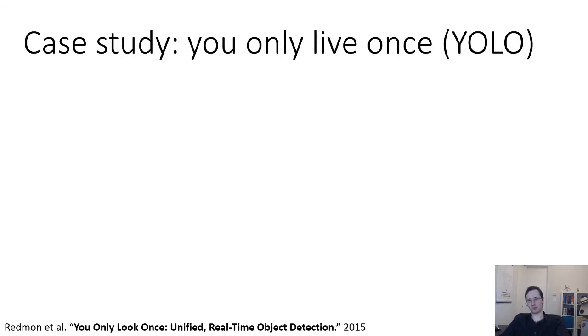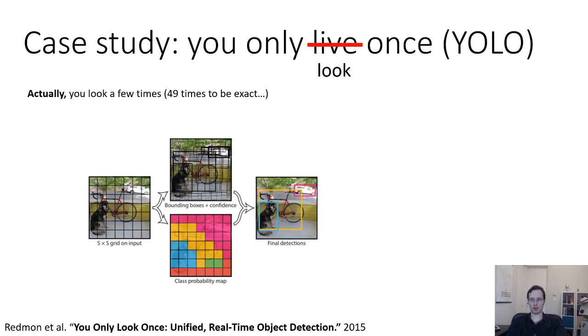So here's a case study for a method that combines these two ideas. It's a model called YOLO, You Only Look Once. The name is a little misleading. You actually look quite a few times, 49 times to be exact. But the reason that they refer to it like this is sort of in contrast to previous methods that involve kind of a more complex and multi-stage pipeline. So you can kind of think of YOLO as a version of overfeat for object detection.